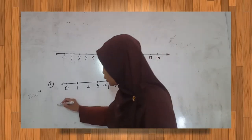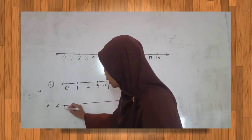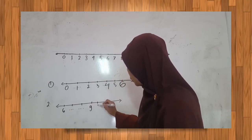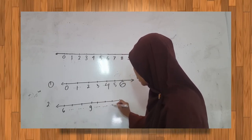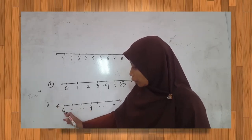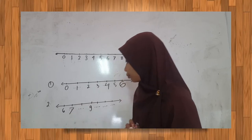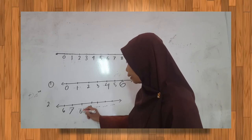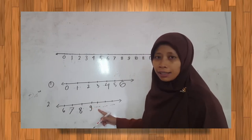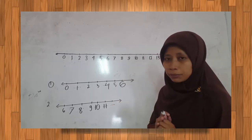Itu contoh yang pertama. Coba contoh yang kedua. Ternyata garis bilangannya mulai angka 6. Oke teman-teman, kalau soalnya seperti ini bagaimana? Ingat, mulainya angka berapa? Angka 6. Habis angka 6 berapa teman-teman? Angka 7, oke kita tulis angka 7. Setelah angka 7, angka berapa? 8. Setelah angka 8 ada angka 9. Nah setelah angka 9, habis angka 9 berapa? 10. Habis 10? 11. Habis 11 berapa? 12.